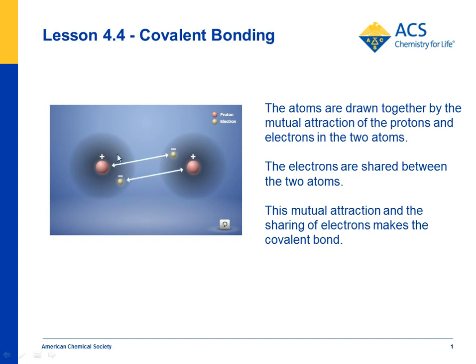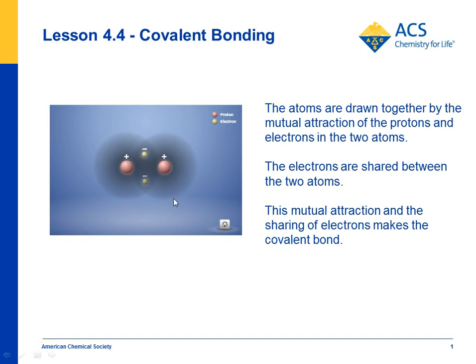There's an attraction between these, an attraction between these, and they bring them together. Now the electrons are near two protons, which is even better for them. It's considered to be what we call a lower energy level.